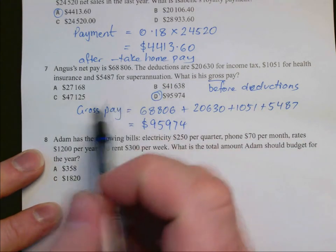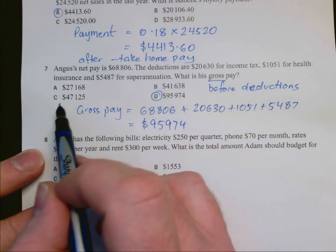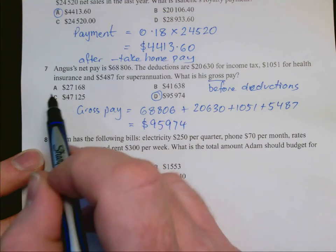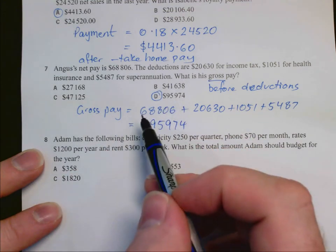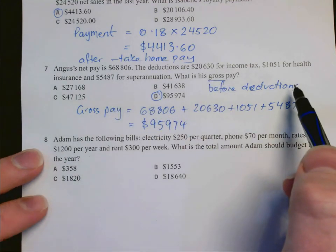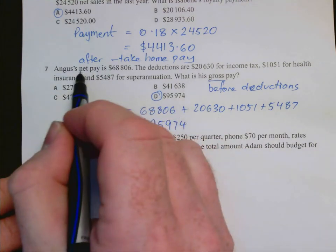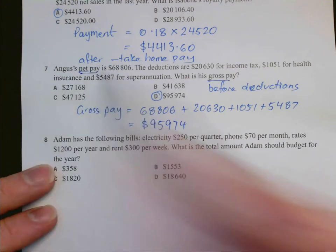Remember these questions that these other answers are distractors. They're not just random numbers. So you get one of these answers by incorrectly calculating the net pay here by subtracting the deductions. Now that's the wrong way around in this question because we've been asked for the gross pay given the net pay.